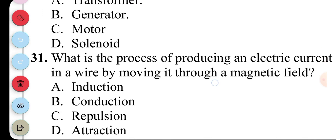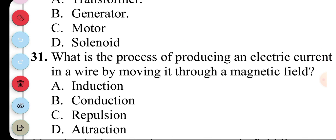Question 31. What is the process of producing an electric current in a wire by moving it through a magnetic field? A. Induction, B. Conduction, C. Repulsion, D. Attraction. The answer to question 31 is A. Induction.